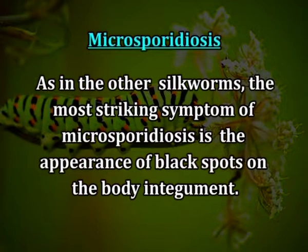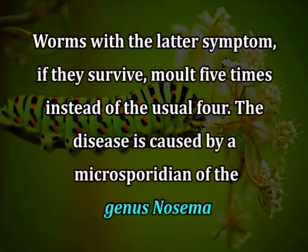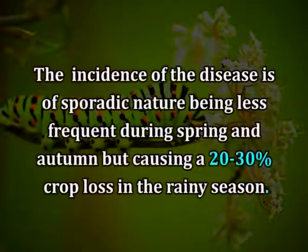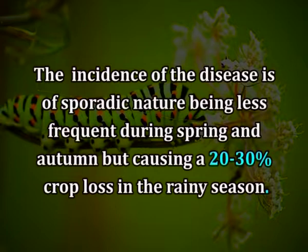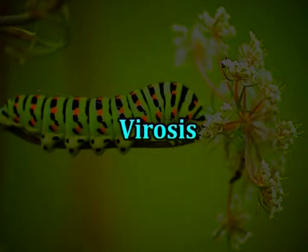Microsporidiasis: As in other silkworms, the most striking symptom of microsporidiasis is the appearance of black spots on the body integument. However, in muga silkworm, the spots are of two types — smaller in some cases and notably bigger in others. Worms with the latter symptom, if they survive, moult five times instead of the usual four times. The disease is caused by a microsporidian of the genus Nosema. The disease is transmitted both orally and transovarially, as well as by insect vector to some extent. The incidence is sporadic in nature, being less frequent during spring and autumn, but causing a 20 to 30 percent crop loss in the rainy season.